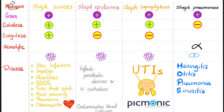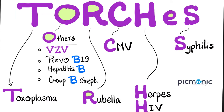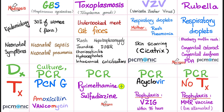Let's talk about the TORCH infections in a comparison table. Group B strep — you can consider it as part of the O, others. It's part of the normal flora in many women, in the vaginal and perianal area. Transmission from mother to baby can lead to neonatal sepsis, neonatal pneumonia, or neonatal meningitis. Diagnosed by PCR or culture; treatment is penicillin G (injection, because this is a severe condition). The prophylaxis is also penicillin.